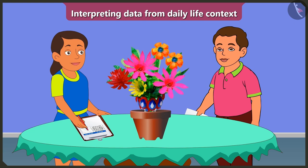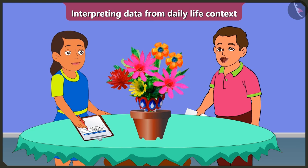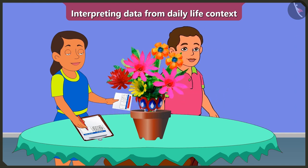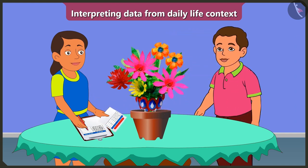Pink flowers — one, two. Hey Bubbly, you don't need to count these flowers. Look, I have filled the data about the flowers which are in the flower vase. Thank you Bunty, I will interpret the data from this table.